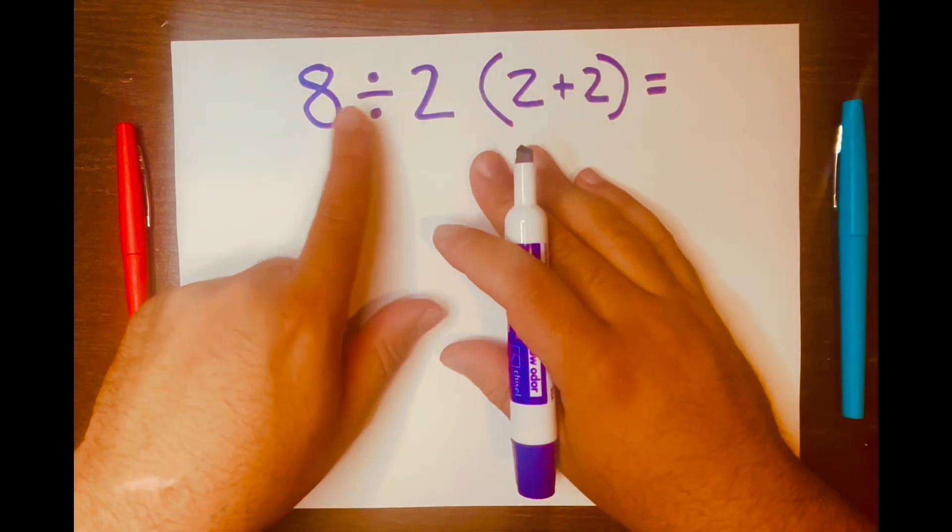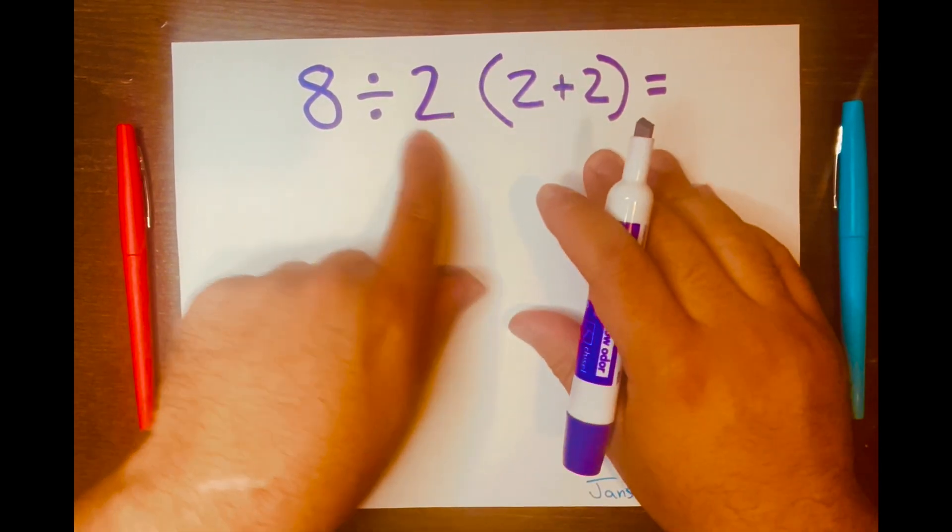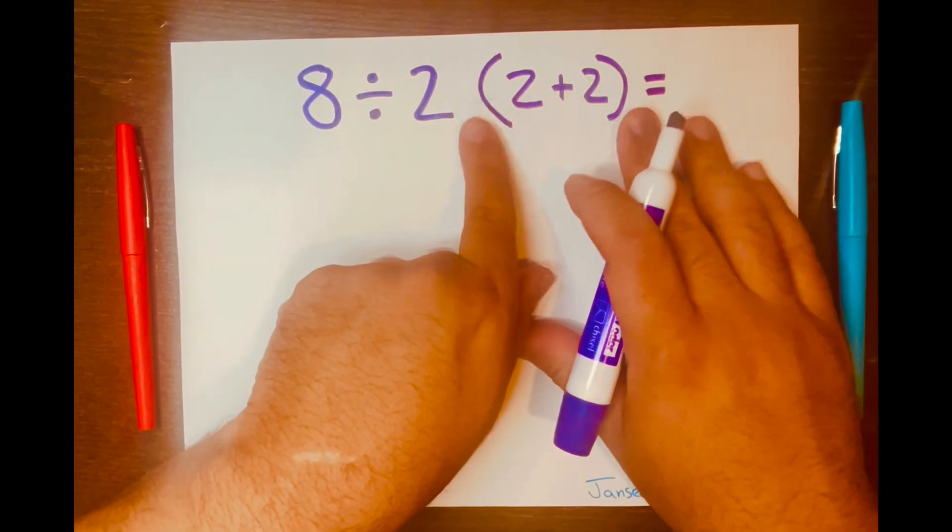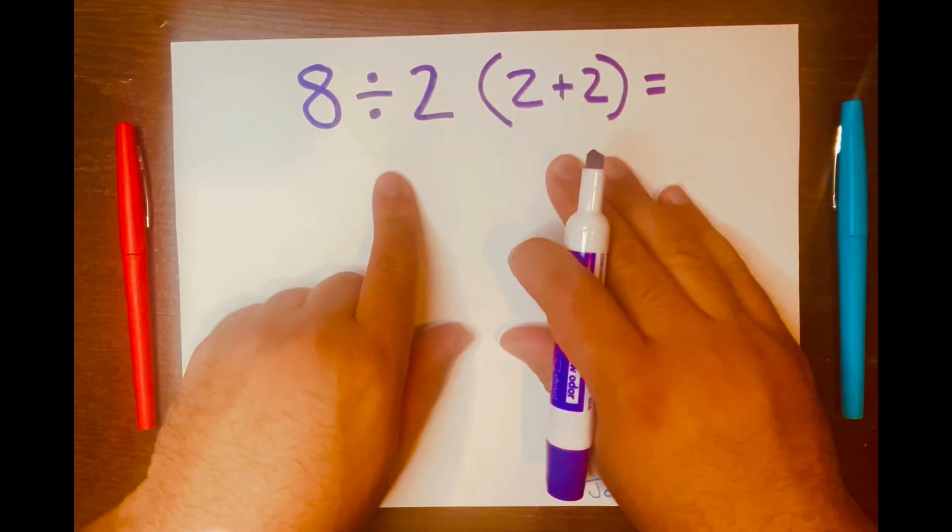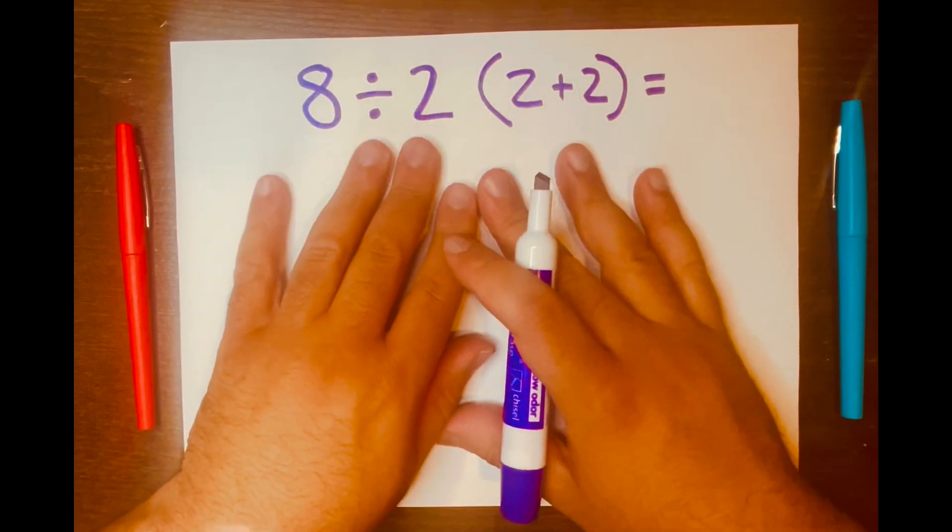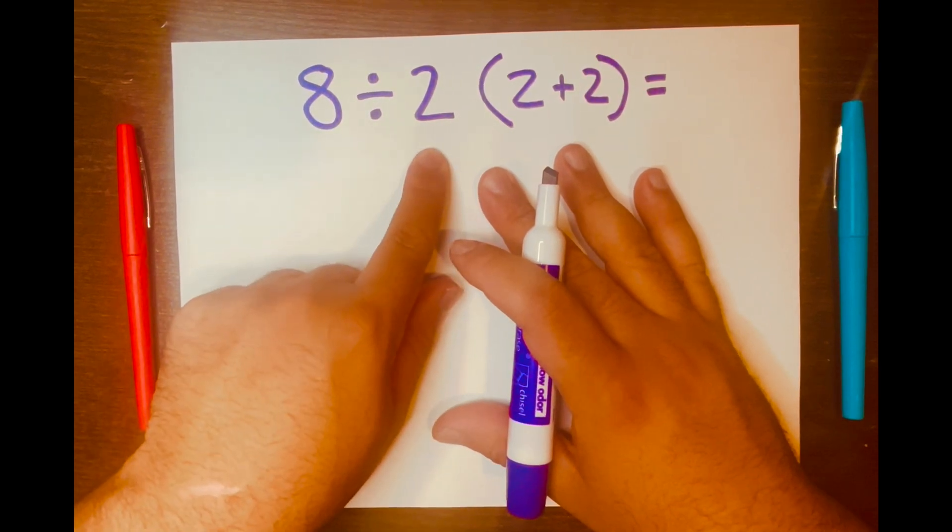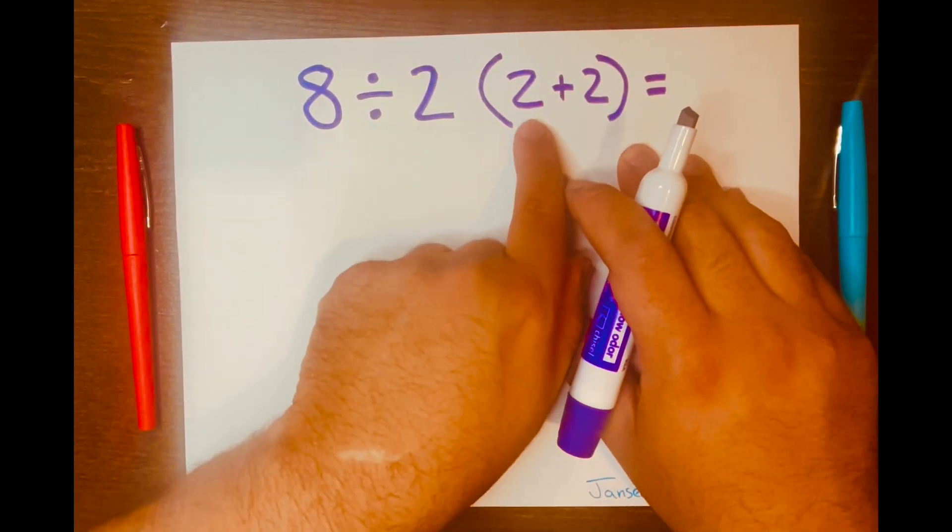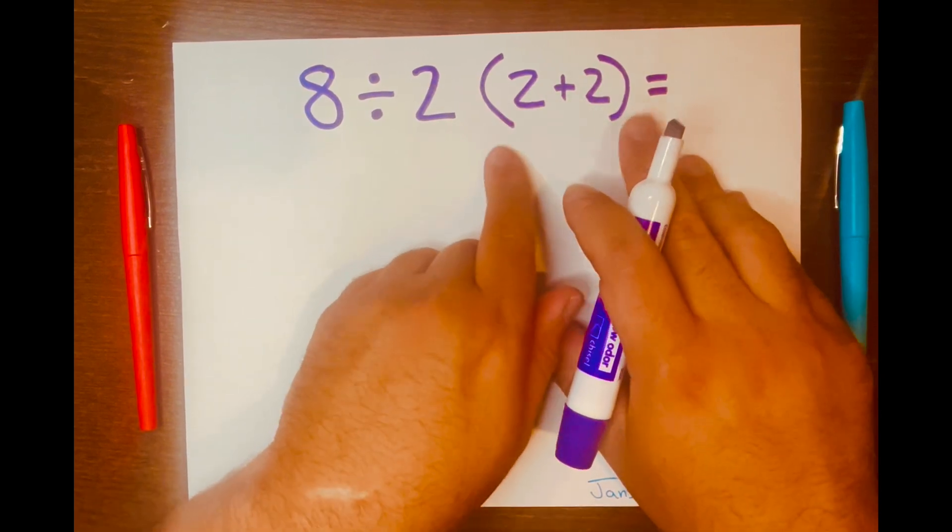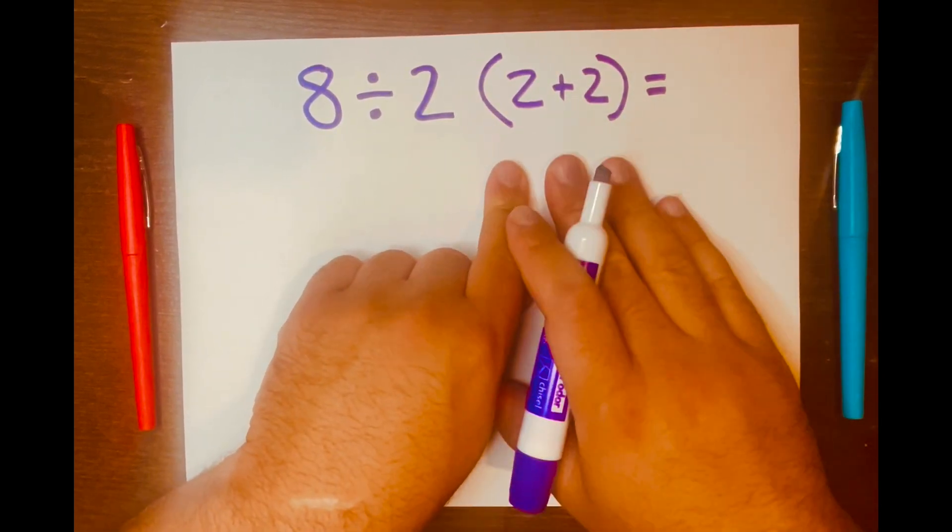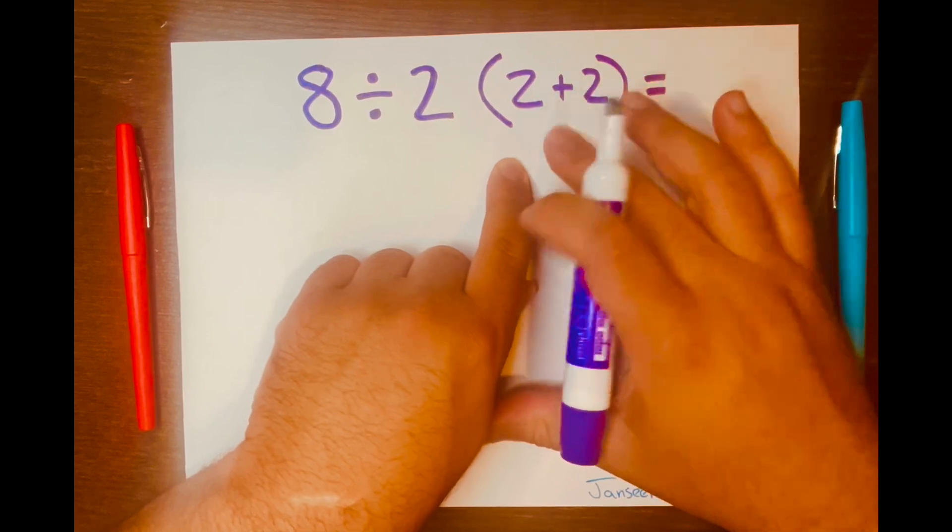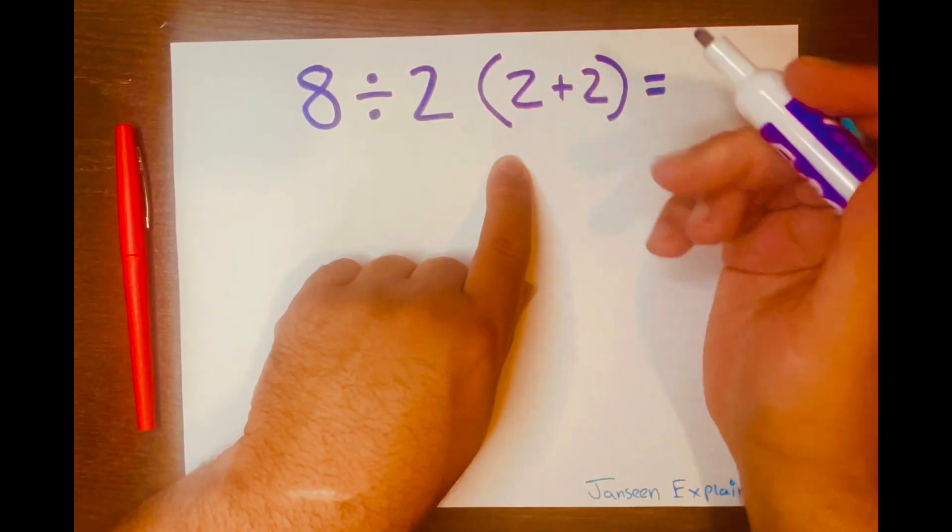Alright, so 8 divided by 2 and then you have this 2 plus 2 inside these parentheses equals. Where do I begin solving this problem? 8 divided by 2, do we start there, or do we start at 2 plus 2 inside these parentheses? Well, according to PEMDAS you start within the parentheses.